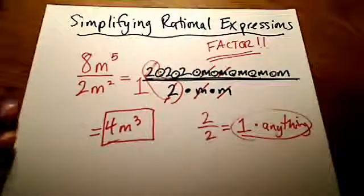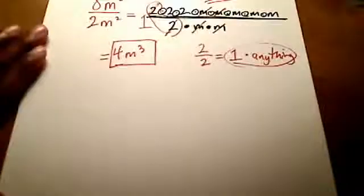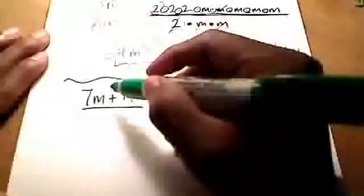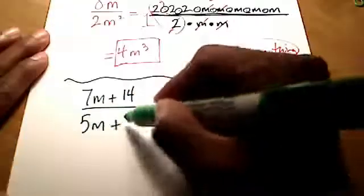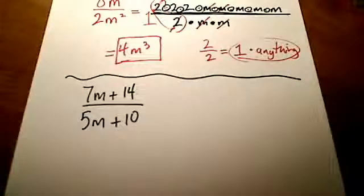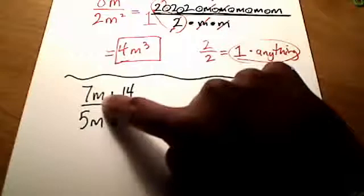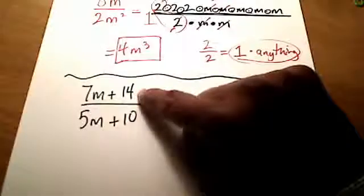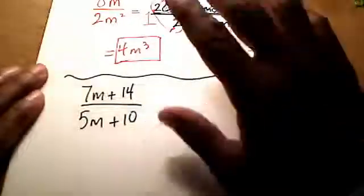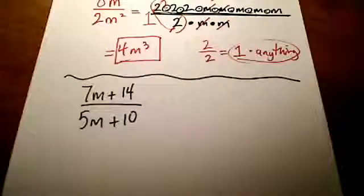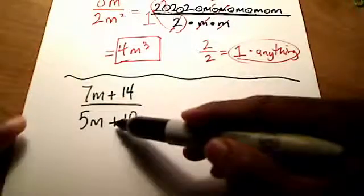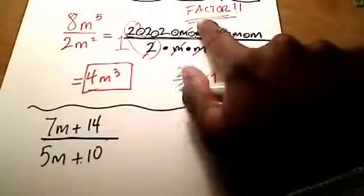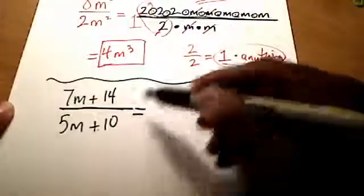Let me show you another example. How about 7m plus 14 over 5m plus 10? Now, I've seen people say: I see an m on top and an m on the bottom — let's cross them out. Or: 2 goes into both 14 and 10, we can start simplifying. Hold on. Do you see that in this problem there's addition going on up top and addition going on on the bottom? Addition does not undo that division bar. So the first thing we should do is factor. Factor is the name of the game.